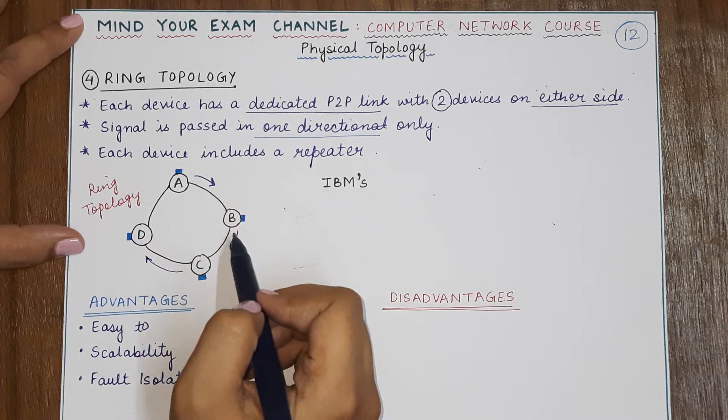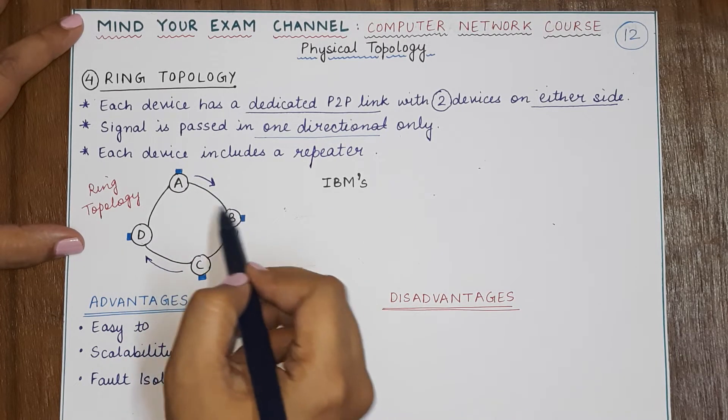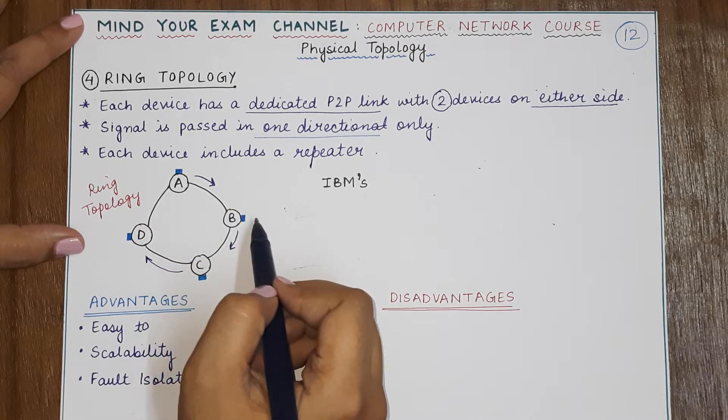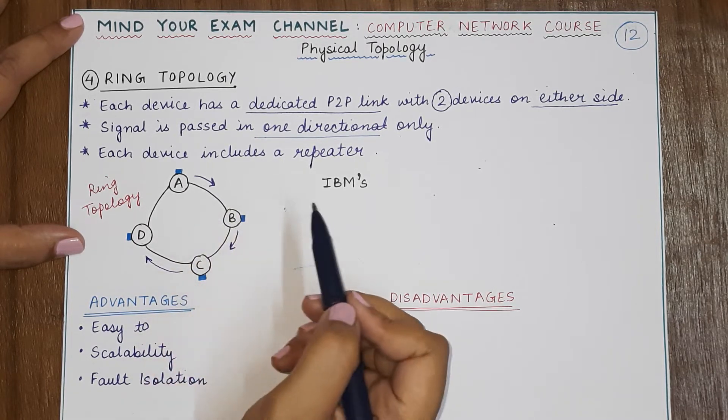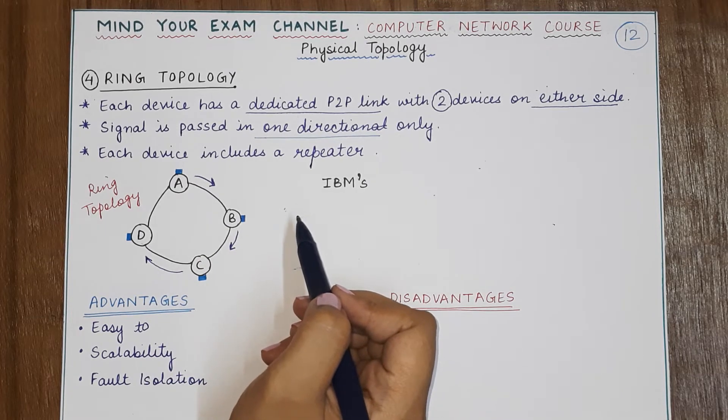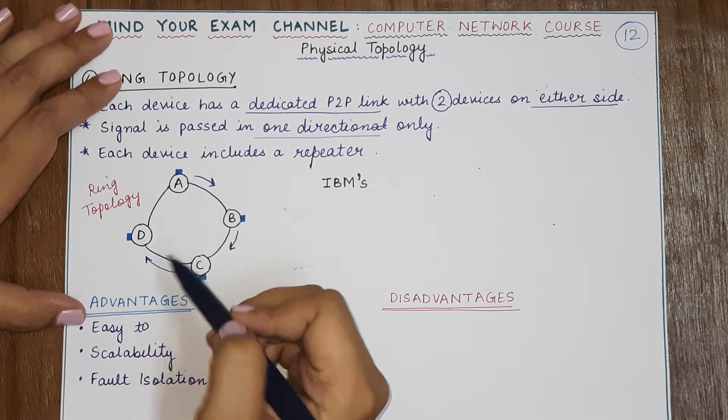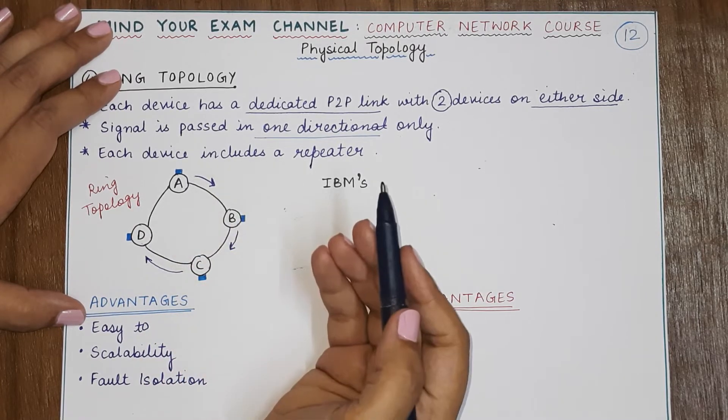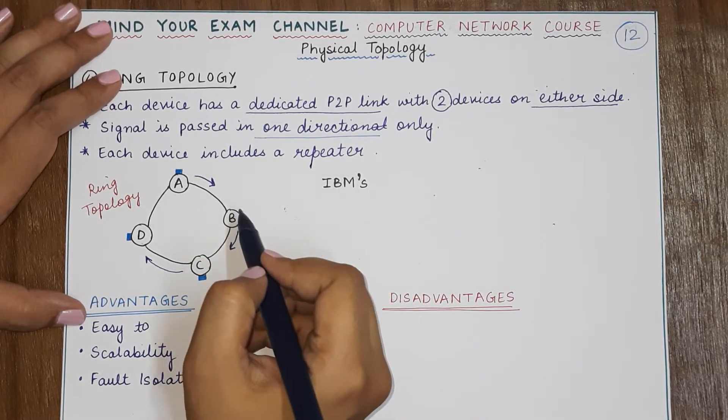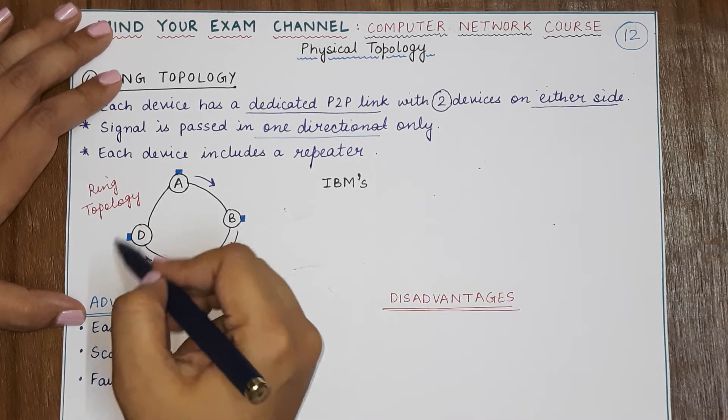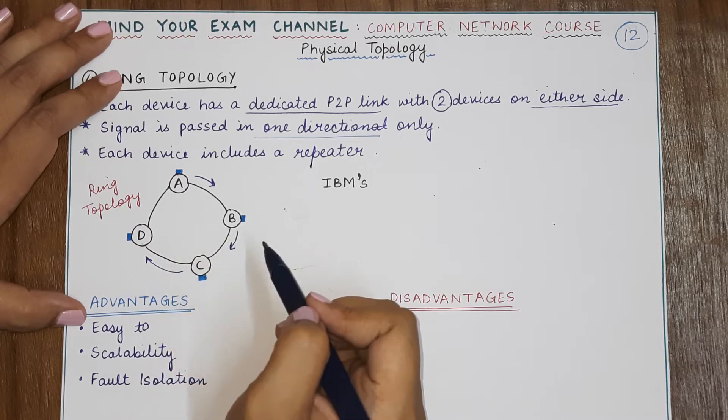A repeater is a device that makes the signal stronger. So when A is sending data to B and B knows that this particular message is not intended for B itself—it is not the destination—what will it do? It will repeat this signal with higher strength so that when this signal is sent forward to reach the final destination D, it does not become weak.